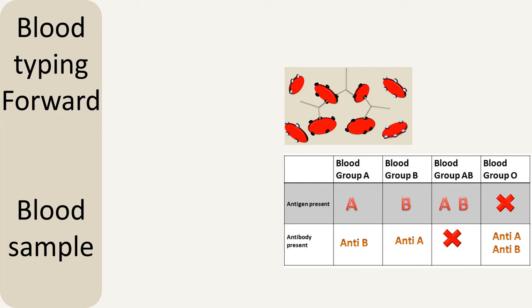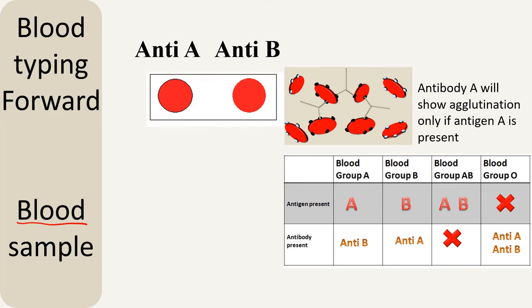Let's understand forward blood typing, wherein we use the blood sample of the individual to determine the blood group. Once you take blood from a person, you add two droplets of blood on a slide. Onto these two droplets, you will add antibody A on one of the droplets and antibody B on another droplet, and you will check for agglutination.